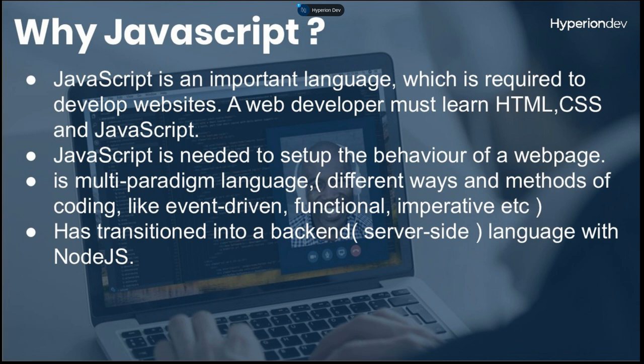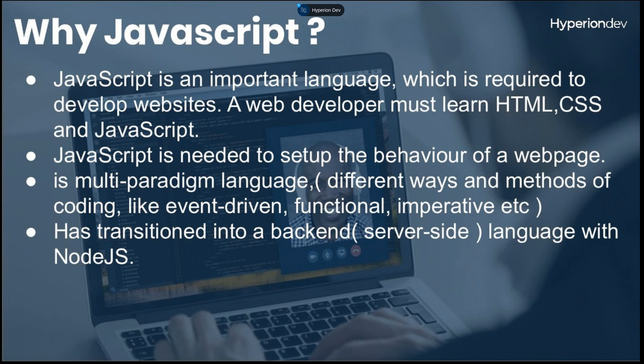For example, Java is fully object-oriented, forcing you to write in objects. JavaScript doesn't force you to write any one way. It's event-driven — you can write code based on events the user interacts with, like clicking a button. It also supports functional programming and object-oriented programming. JavaScript has also transitioned to become a back-end language. With Node.js, you can write JavaScript on the server side, similar to PHP or Python.